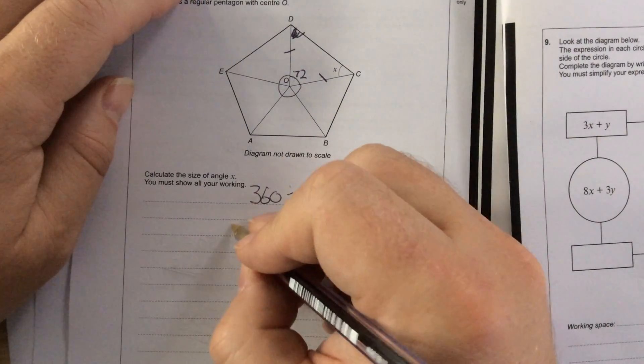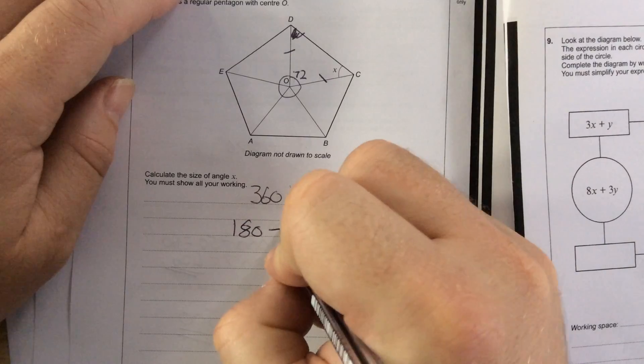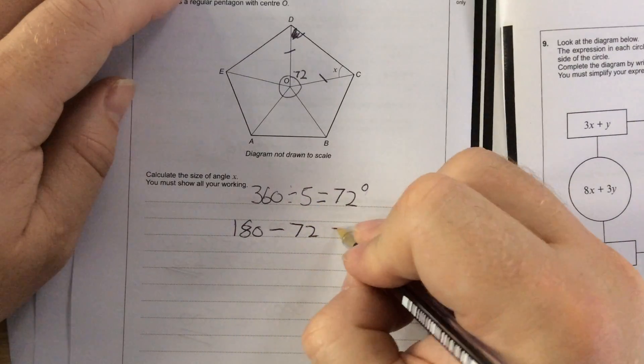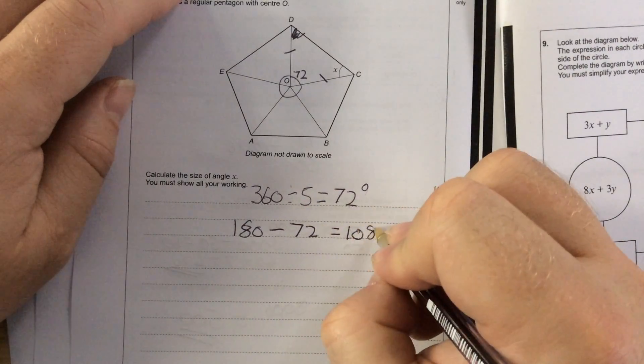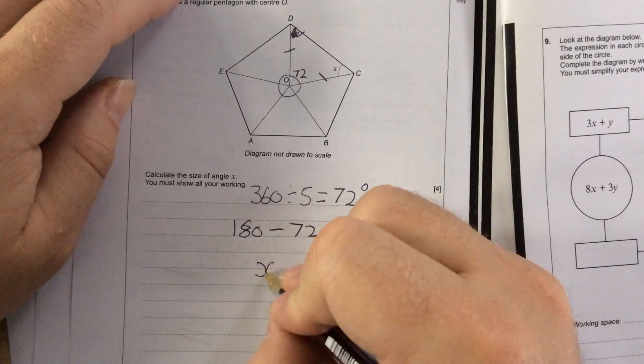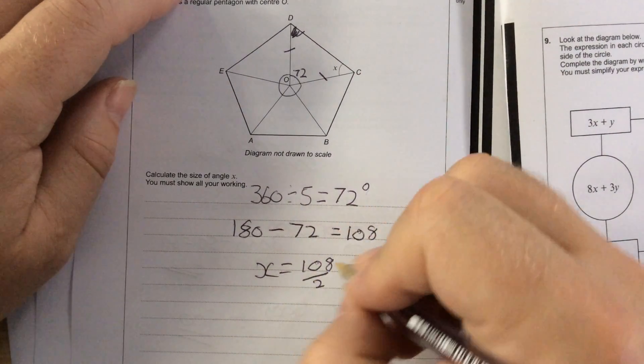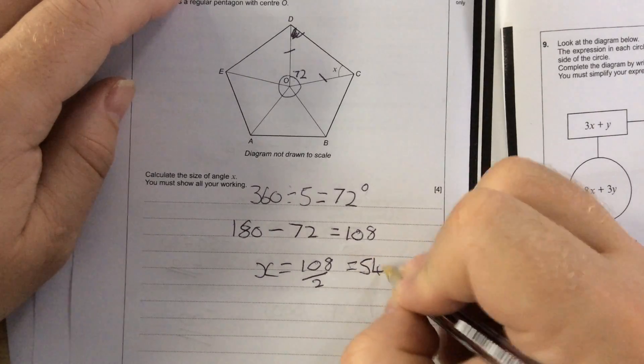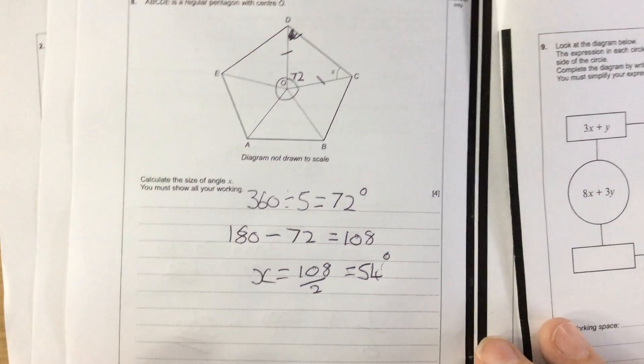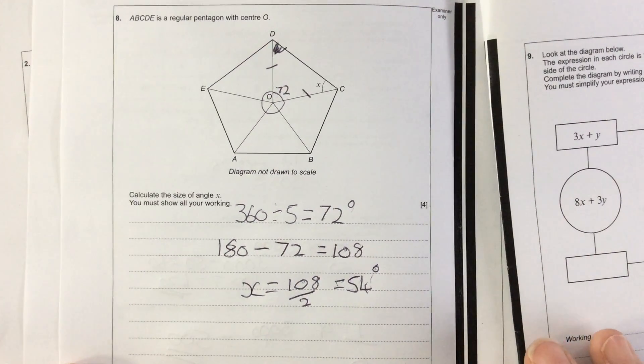Because it's a triangle, and angles in a triangle add up to 180, to find X, I would do 180 take away 72 is 108. So both of them angles make 108, and then because there's two of them, 108 divided by 2 is 54 degrees.